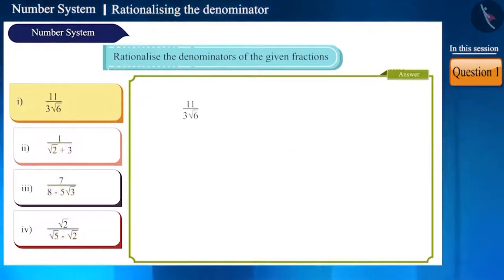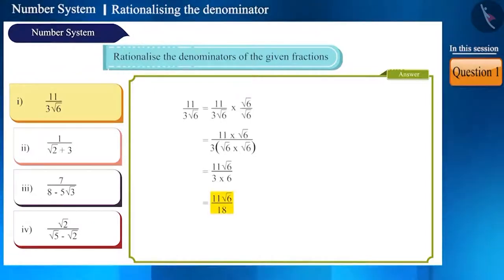Let's take the first question: 11 by 3 root 6. Here, if we multiply both the numerator and the denominator by root 6, we will get the numerator as 11 root 6 and the denominator will be 3 multiplied by 6 is equal to 18. And now, the fraction will be 11 root 6 by 18.